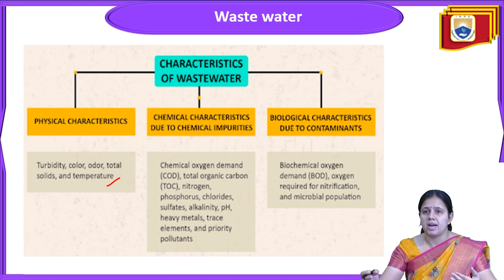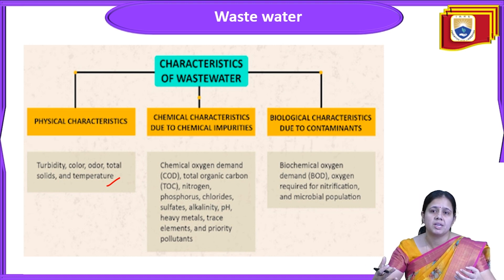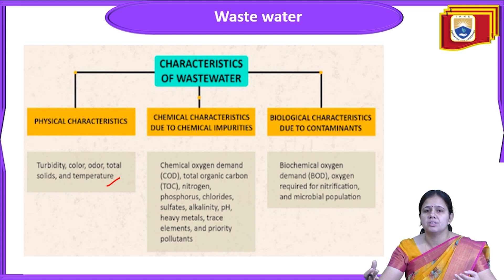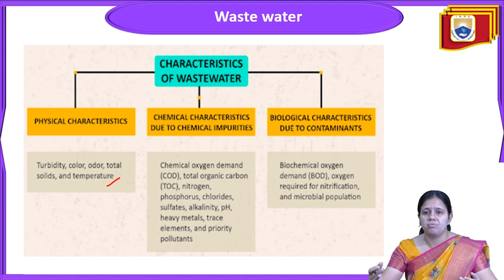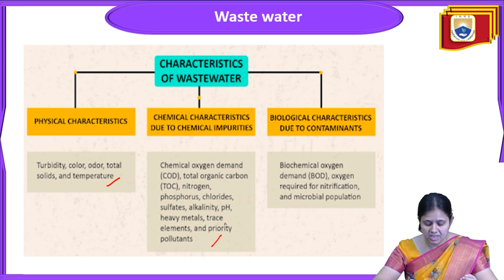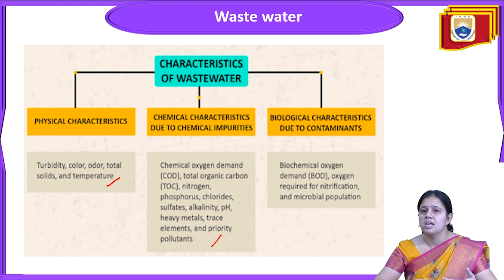For chemical characteristics, these are due to the addition of chemical impurities. The factors responsible for chemical characteristics include COD, total organic carbon (TOC), nitrogen, phosphorus, chloride, sulfate, alkalinity, pH, heavy metals, trace elements, and some pollutants. For biological characteristics, relevant parameters include BOD (biological oxygen demand), chemical oxygen demand, oxygen, total oxygen required for nitrification, and microbial population.